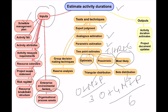Let's take the example of traveling to Ooty by car. The optimistic estimate could be 8 hours, the pessimistic 12 hours, and the most likely 10 hours. Using the triangular distribution: (8 + 10 + 12) / 3 = 30 / 3 = 10 hours.